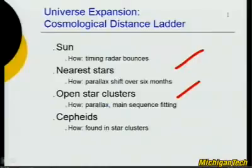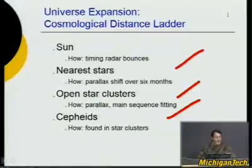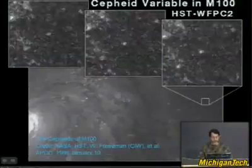For star clusters there's a different method, and for the nearest galaxies you have to look at a certain kind of variable star called a Cepheid variable, which varies in a very precise way. The longer it takes to vary, the intrinsically brighter it is. If a star appears dim yet has a very long period — meaning it should be very bright — then it must be far away to appear so dim. So Cepheid variables give us another rung on the cosmological distance ladder.